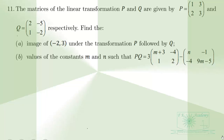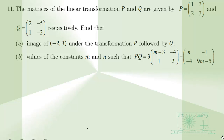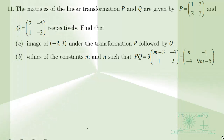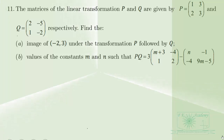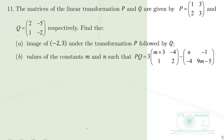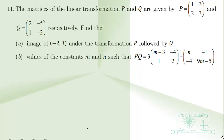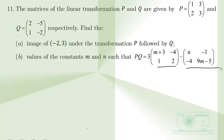The matrices of the linear transformation P and Q are given by P = [[1, 3], [2, 3]] and Q = [[2, -5], [1, -2]] respectively. Find the image of (-2, 3) under the transformation P followed by Q. Part B asks for the values of the constants M and N such that PQ equals 3 times one matrix minus another matrix.